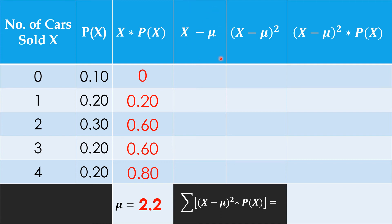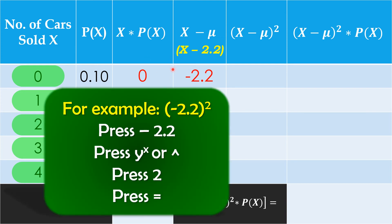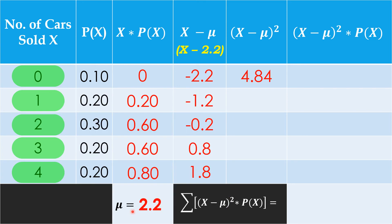The next column is x minus the mean, that is x minus 2.2. So: 0 minus 2.2 is negative 2.2; 1 minus 2.2 is negative 1.2; 2 minus 2.2 is negative 0.2; 3 minus 2.2 is 0.8; and 4 minus 2.2 is 1.8. The next step is to square these values using your calculators. Negative 2.2 squared is 4.84. Negative 1.2 squared is 1.44. Negative 0.2 squared is 0.04. 0.8 squared is 0.64. And 1.8 squared is 3.24.